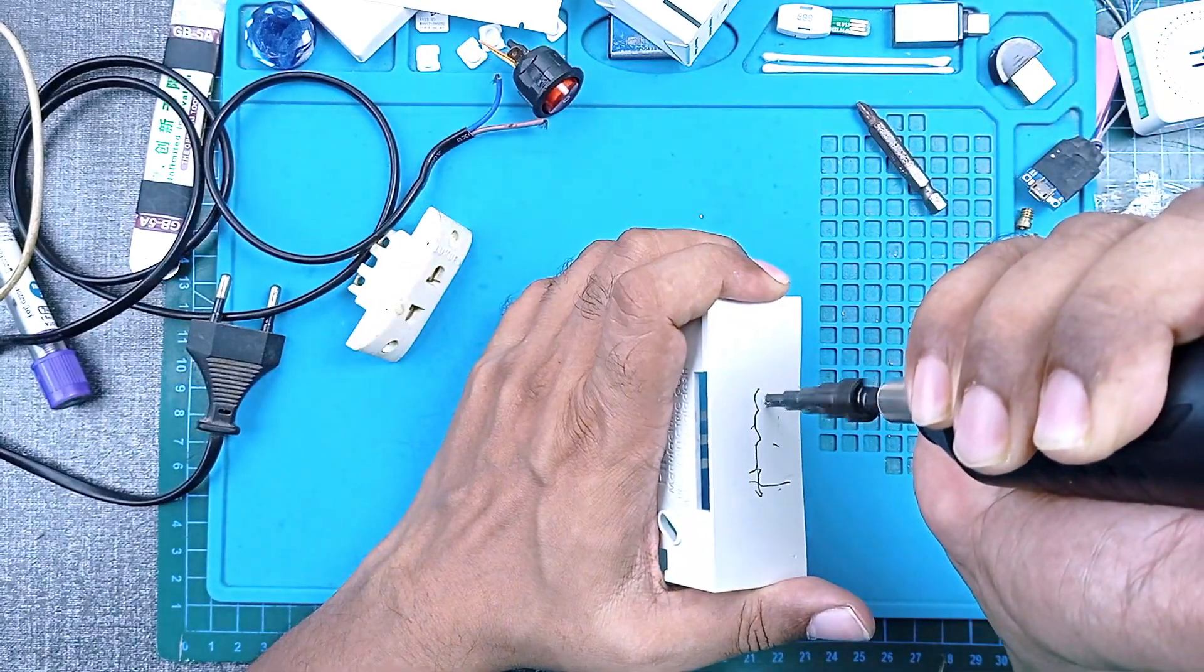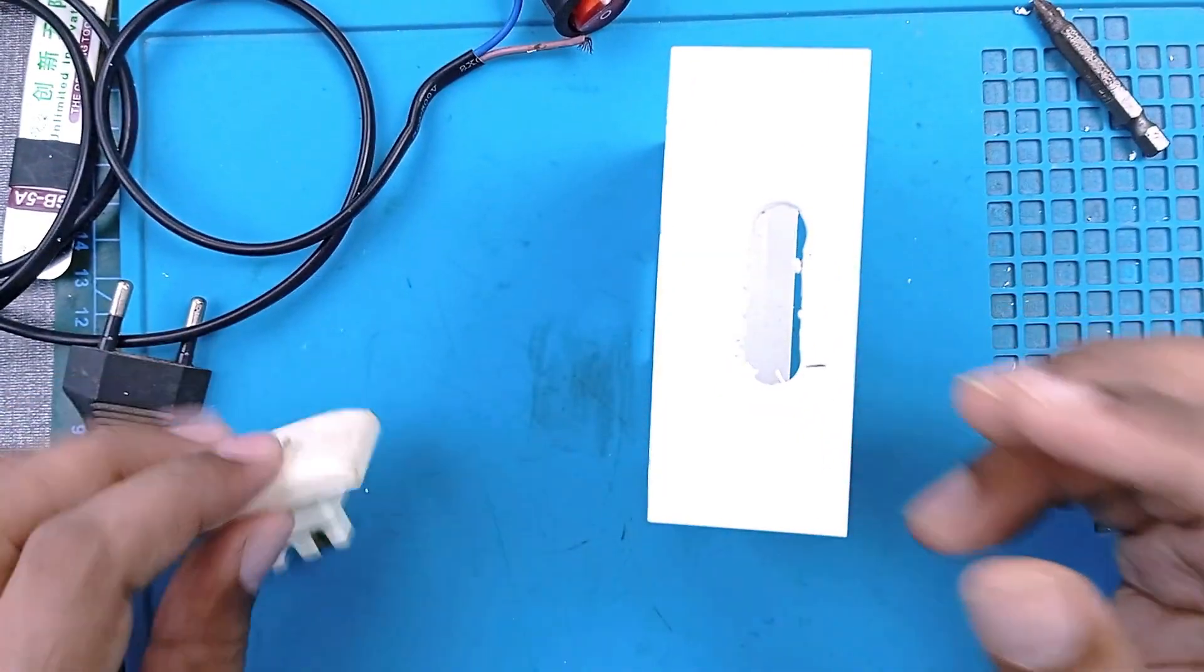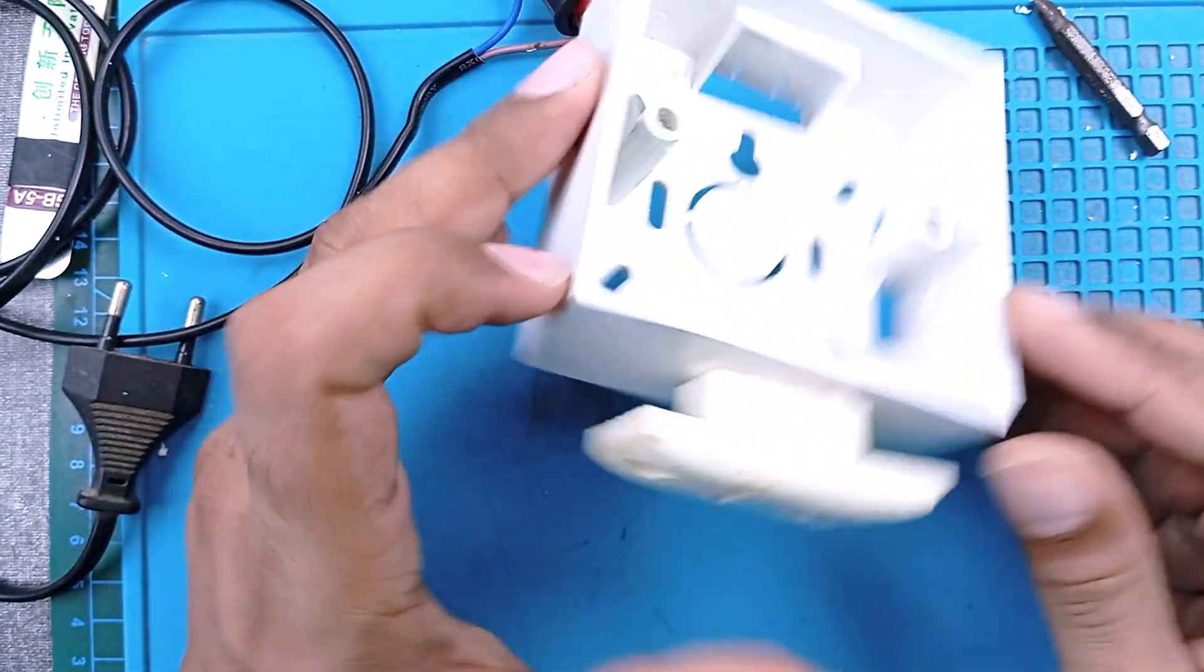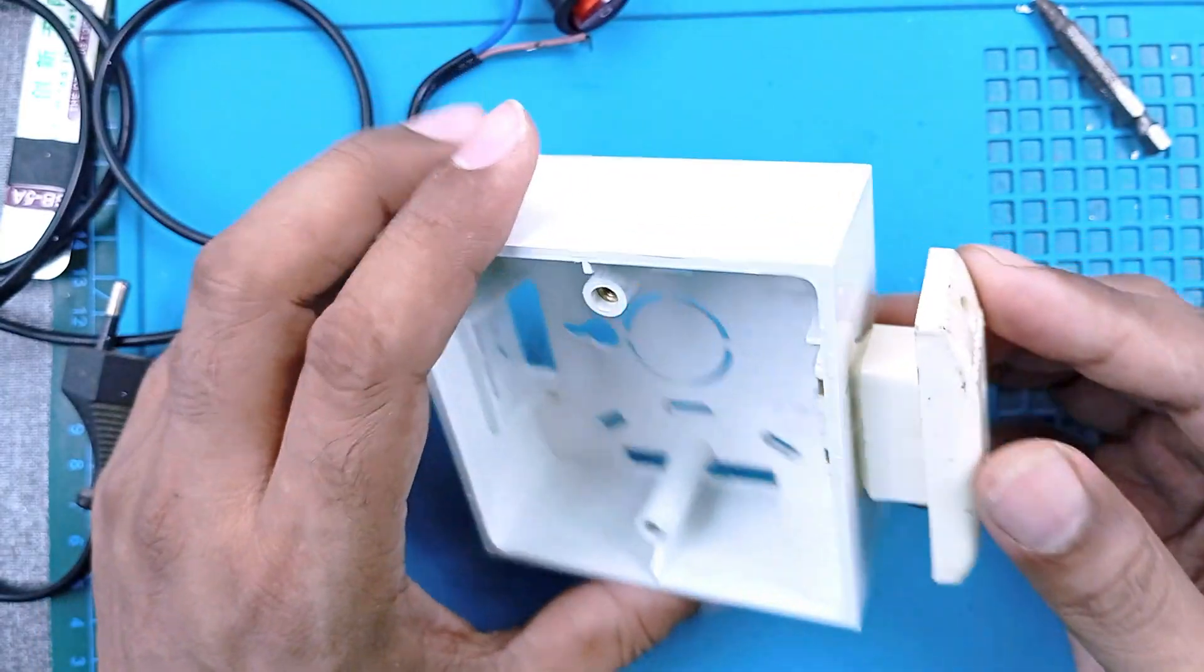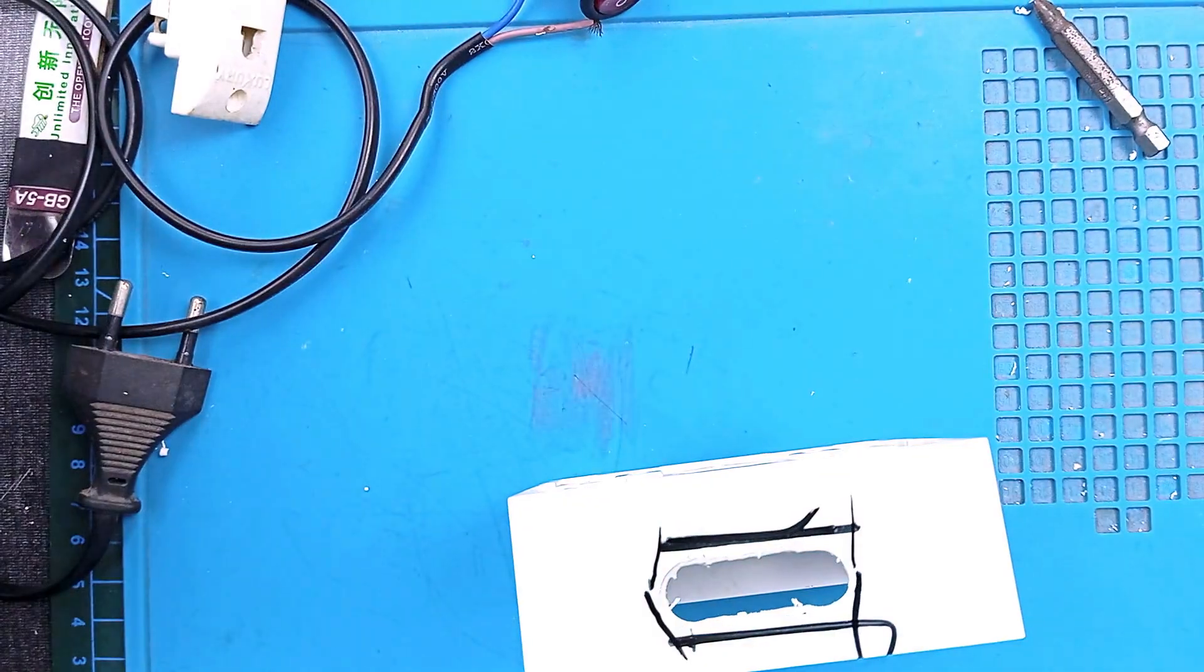Making a hole for the socket. We made a hole with this bit, but it's not enough. We have to cut it more so we can fit our socket in here.